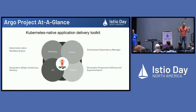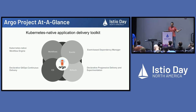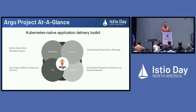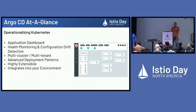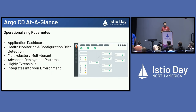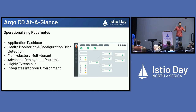The Argo project is a suite of tools that operationalizes Kubernetes — there are things like workflows, events, CD rollouts. In the Istio world, you'll hear a lot about Argo CD and Argo Rollouts. Argo CD tailors to both platform engineers and developers. It has a feature-rich UI, health and monitoring, multi-cluster and multi-tenant capabilities that platform engineers want, advanced deployment patterns, and extensibility and integration that developers want. Being able to see everything in a single UI for both teams was the end goal for Argo CD.